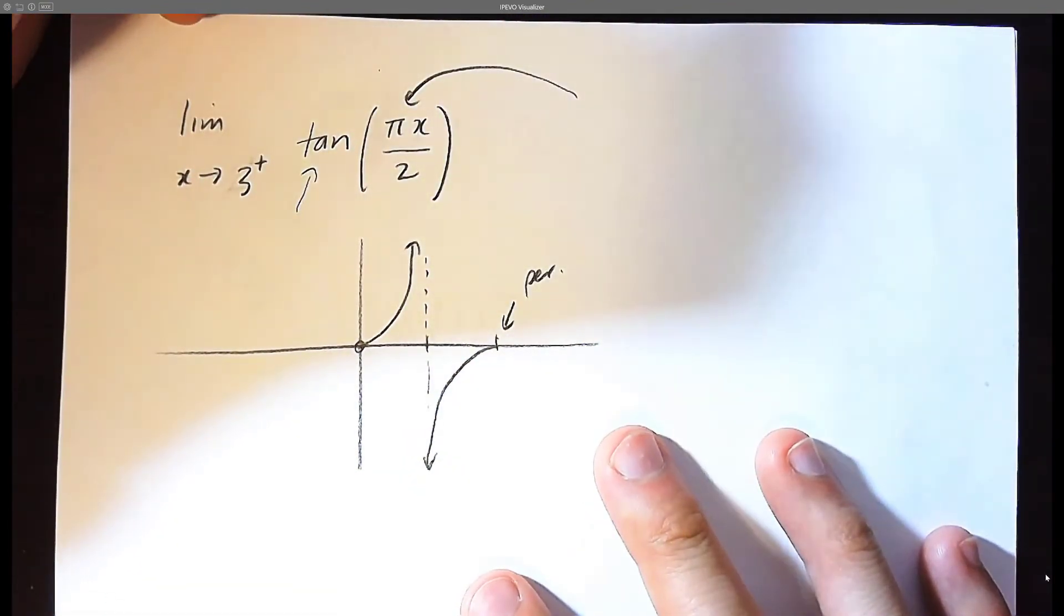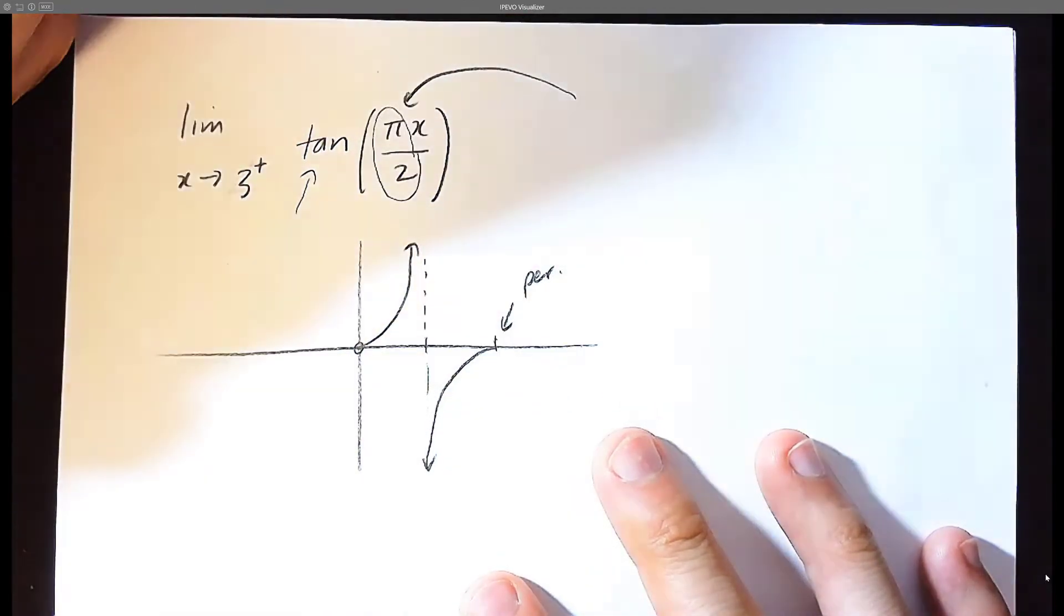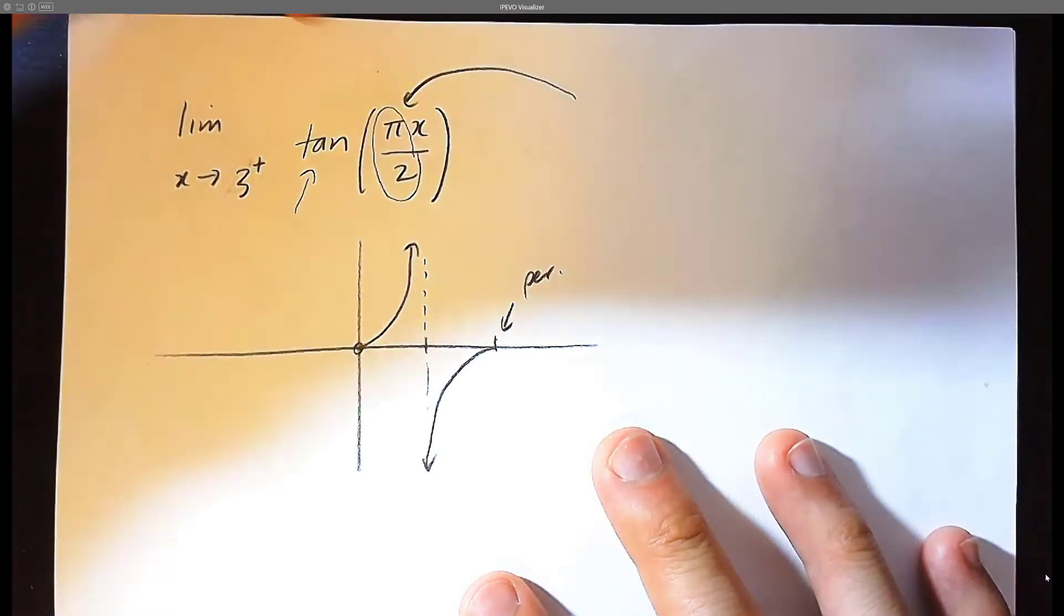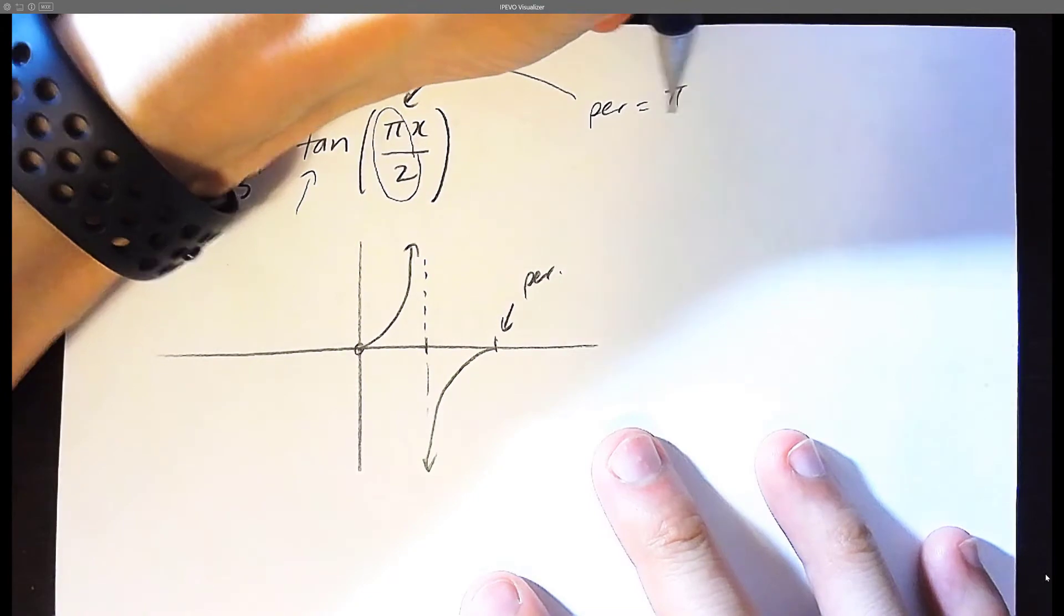Normally the period of tan is just pi, but in this case we have a b value. We have a transformation, the tan is either compressed or expanded. So we're going to say that the period for tan is not 2pi over b, it's actually pi over b.